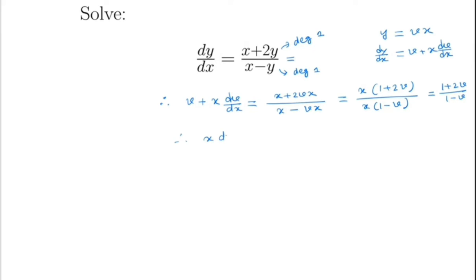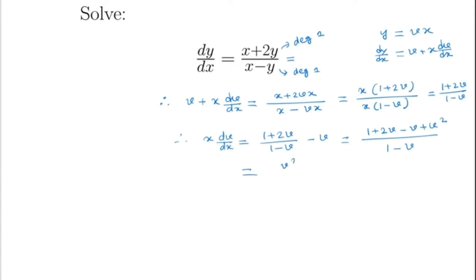We have x(dv/dx) = (1 + 2v)/(1 - v) - v, which equals (1 + 2v - v(1 - v)) / (1 - v). So we get a separable differential equation.